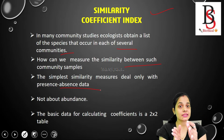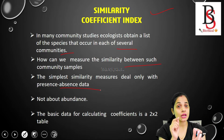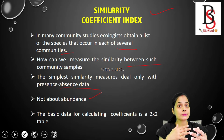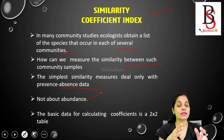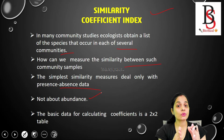The similarity coefficient index depends on whether a species is present in more than one community or not. It does not depend on abundance — how many species are present in each community does not matter here. What matters is only the presence or absence of species in the samples, and that data is used for calculating the index.